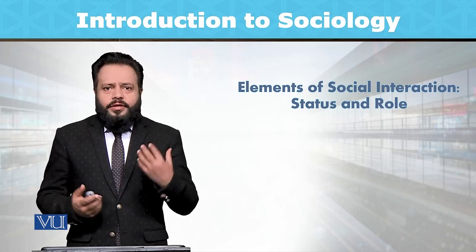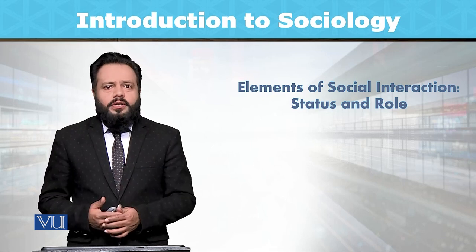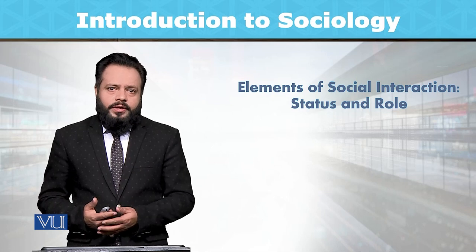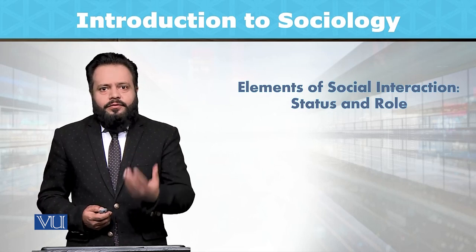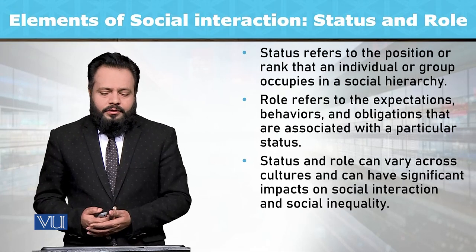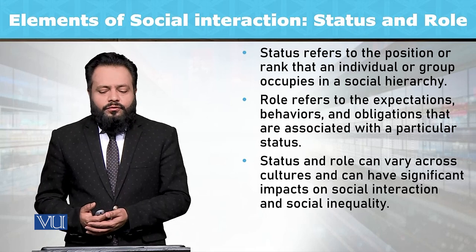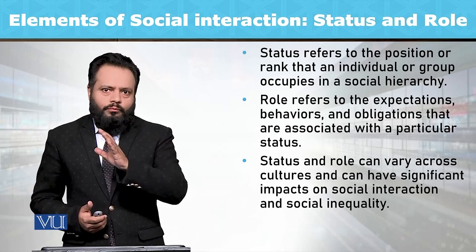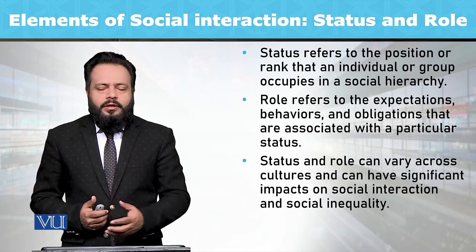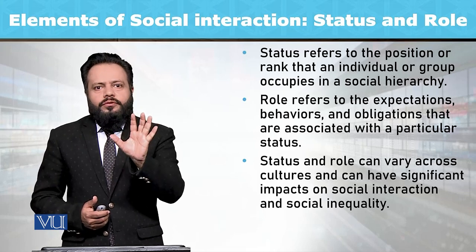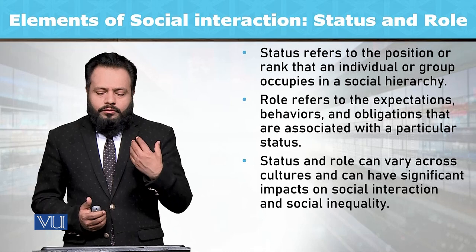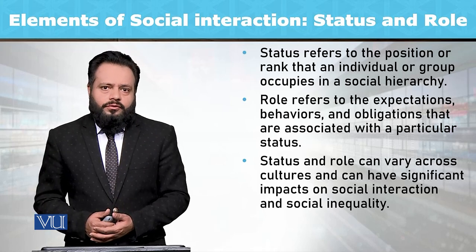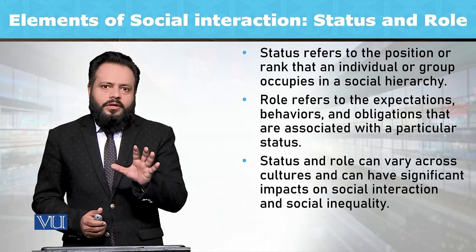The statuses and positions are both different within social institutions. For example, in the family system, someone is in the status of father, someone in the status of mother, someone as brother, and someone as son. Based on these statuses, we also expect corresponding roles from them. Formally speaking, social status refers to the position or rank that an individual or group occupies in a social hierarchy. Since society is built upon different hierarchical positions, status also reflects those hierarchical positions. Role refers to the expectations, behaviors, and obligations that are associated with a particular status.